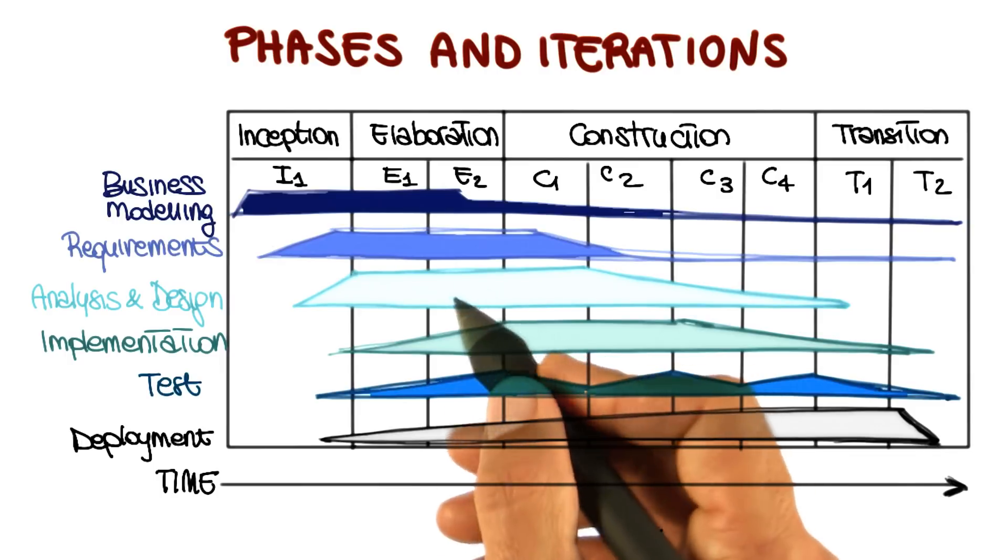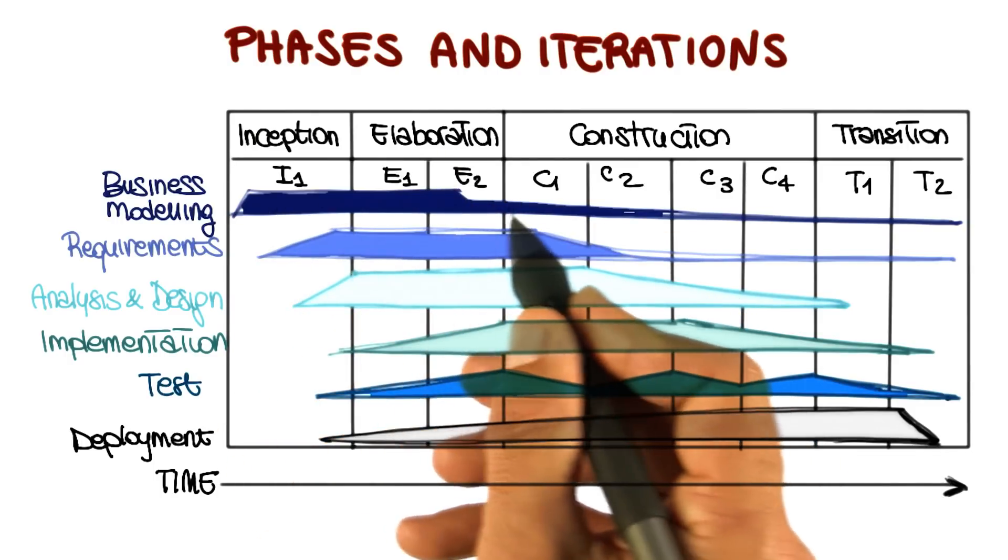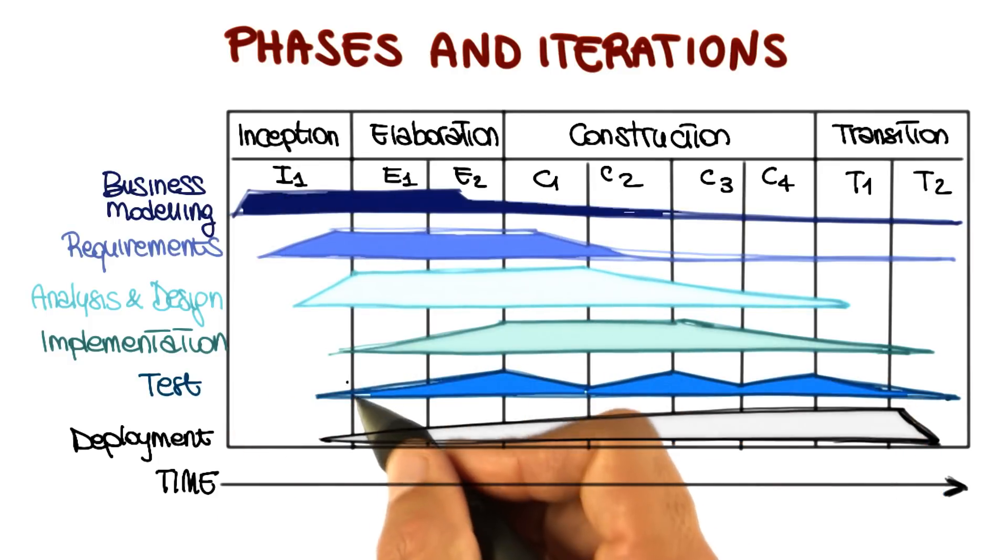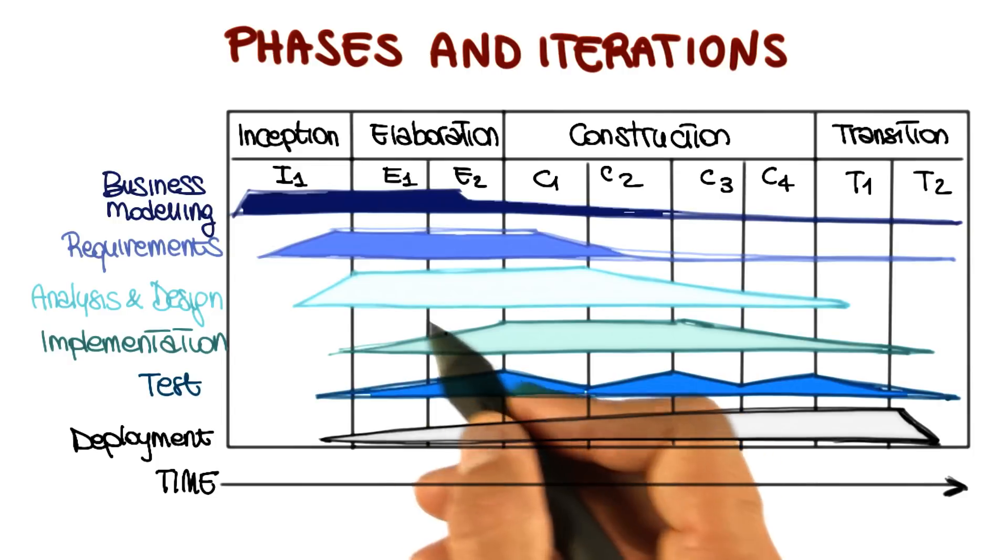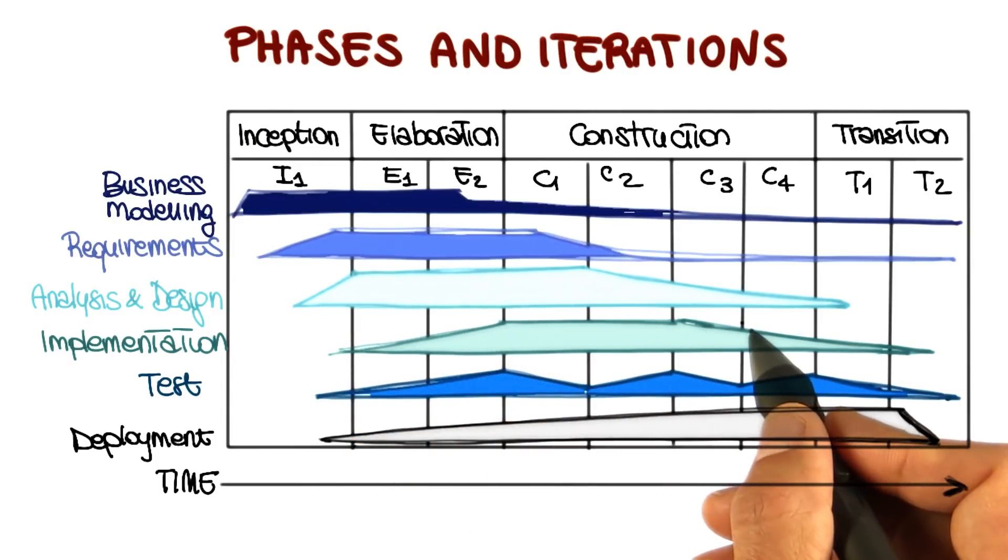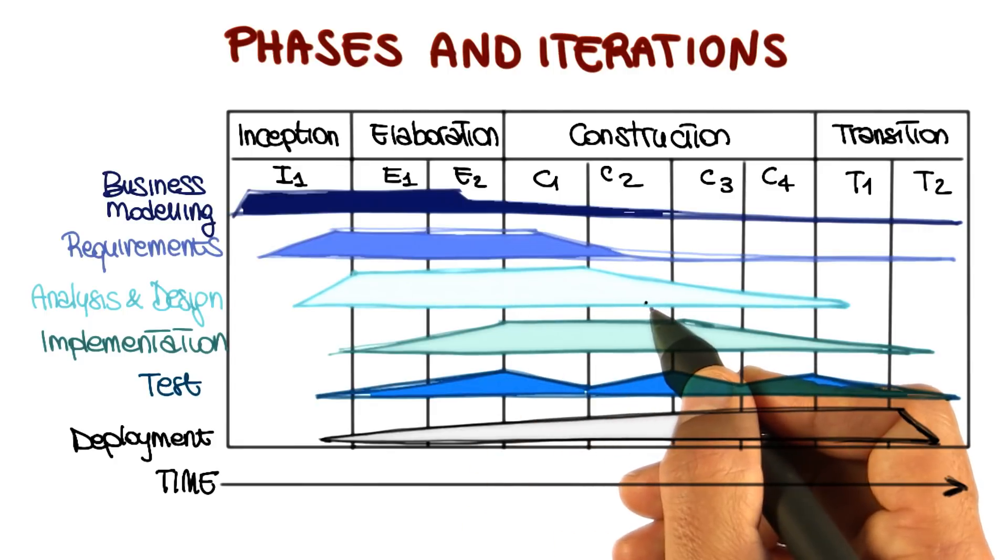It should also be clear that although there is normally one main phase for each activity, the activities really span multiple phases, which is actually one of the interesting aspects of RUP. So the fact that you're not really done with an activity even in later phases. Why? Well, because that allows you in subsequent iterations to address problems that came up in previous iterations.